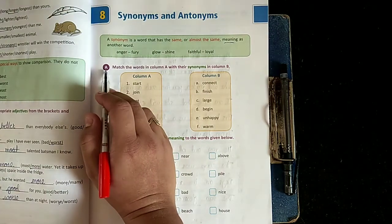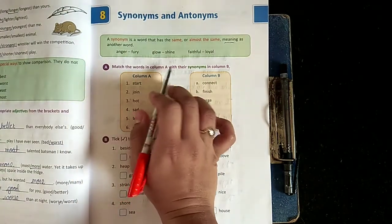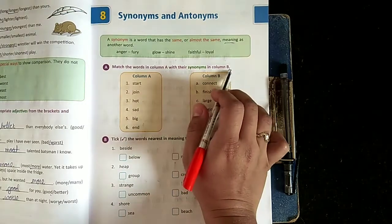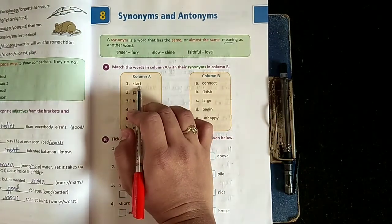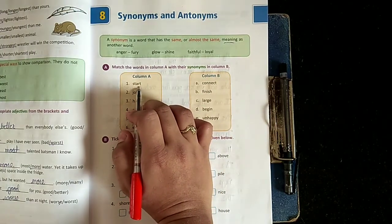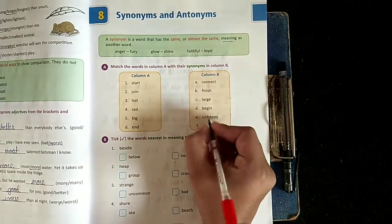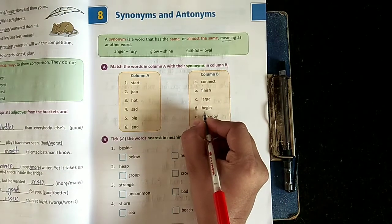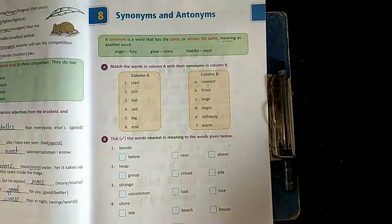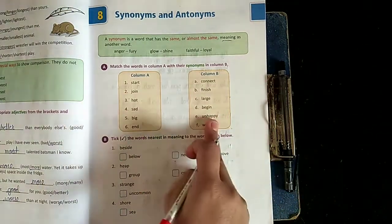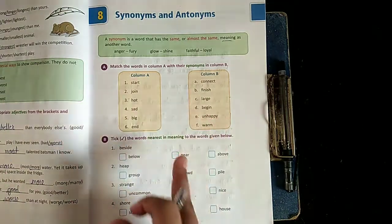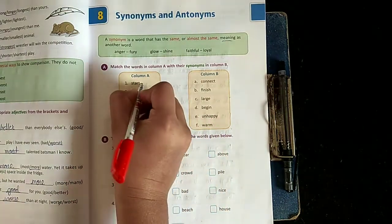So see in the example here, you'll find it better. Match the words in column A with the synonyms in column B. Column A: first, start. Start means to begin, chalu karna, right? And here in column B: begin. Begin also means to start, chalu karna, right? Words are different but the meaning of both words is same. So let's match it.